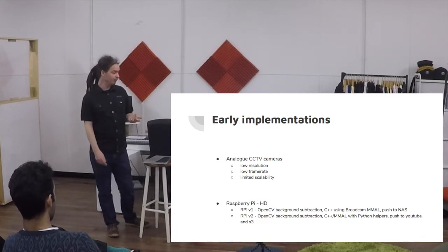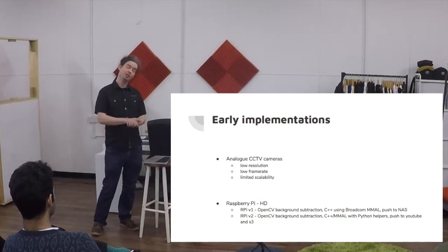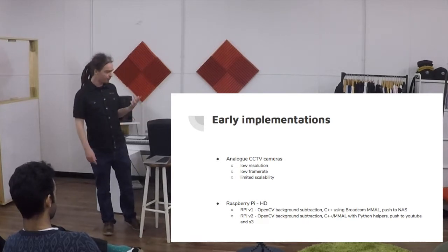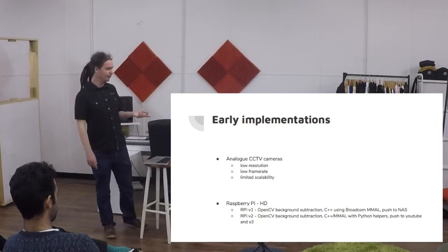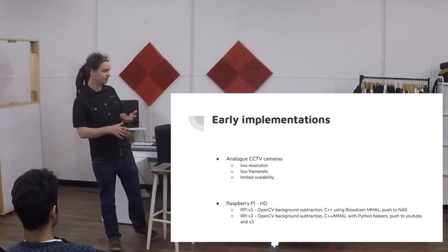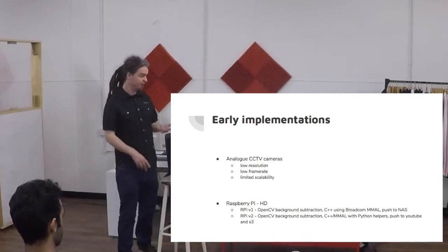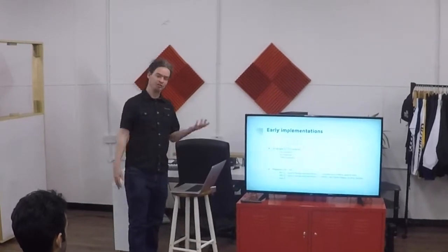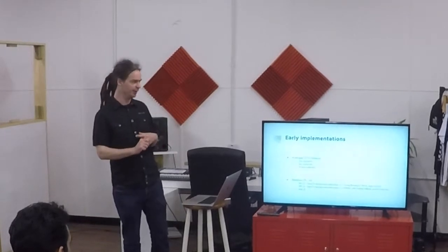I wanted an HD solution, and the cheapest option at the time was Raspberry Pi — the only other option was a GoPro, which is difficult to do anything with beyond pulling SD cards. The first version used Raspberry Pi v1, a single-core with about half a gig of RAM, so everything had to be written in C++ integrated directly with the GPU to read HD data. Then I moved to Raspberry Pi v2, which has more cores, more RAM, and supports Python. We started pushing to YouTube — until they changed their rules after we hit 1.4 million videos and got blocked.